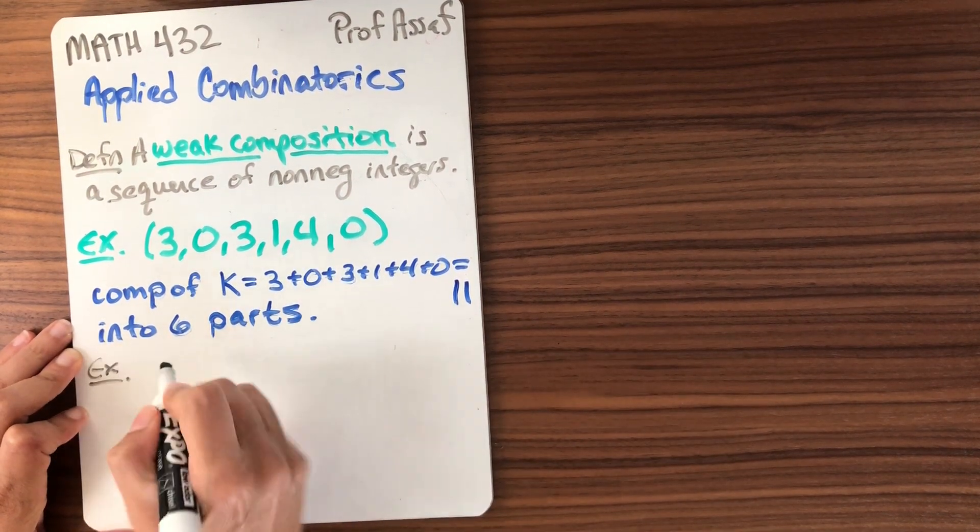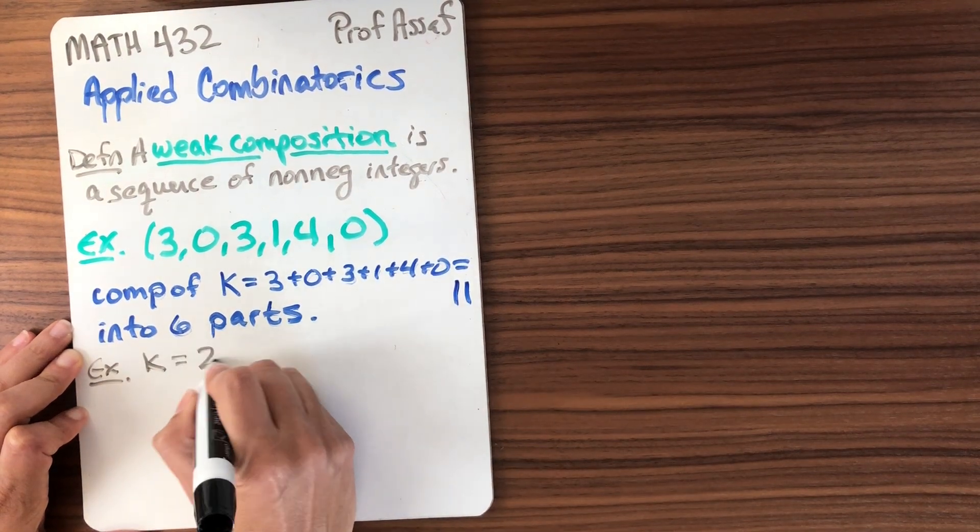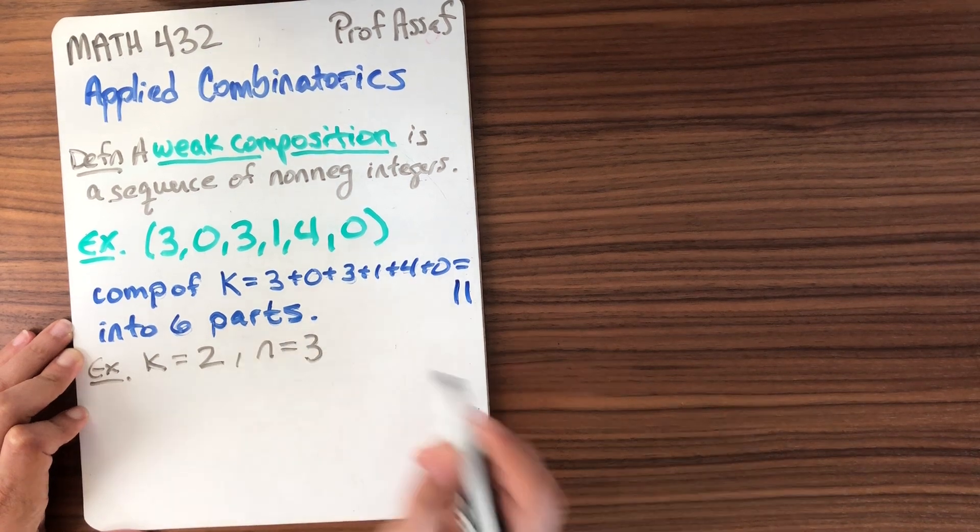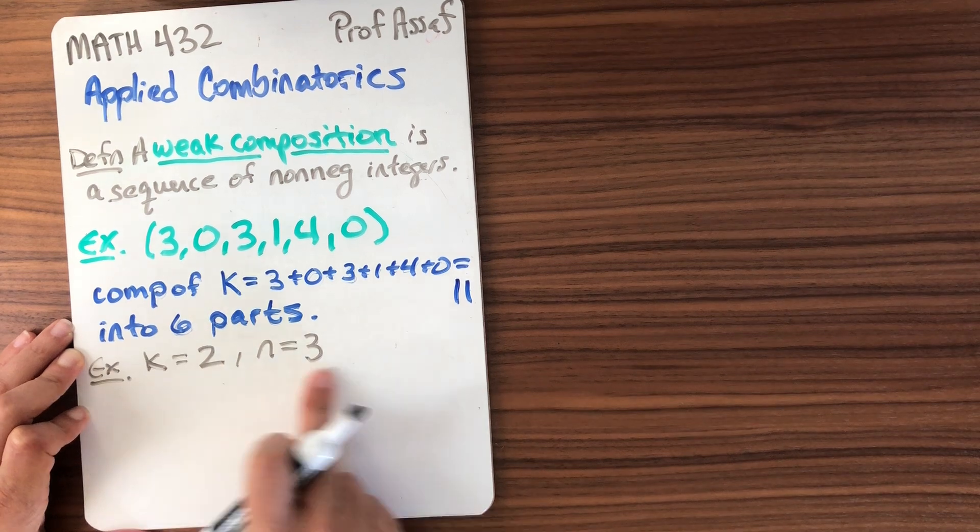Because we could always just keep adding zeros and get it to be infinite. So here's another example. Let's take k equal to something nice and small like 2 and let's take n equal to 3.